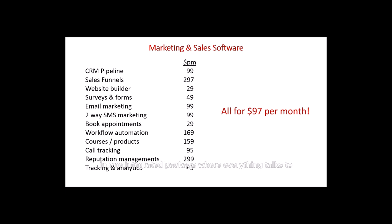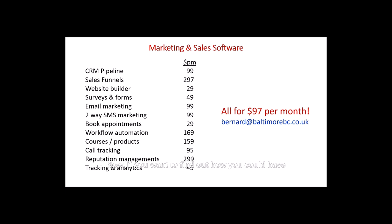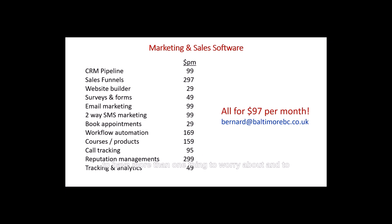What if you could get all of that in one integrated package where everything talks to each other — no compatibility issues — and you could get all of that for $97 a month? In fact, you could actually get it for just over $80 a month if you do it the right way. If you want to find out how you could have all of these software packages under one heading, integrated, all talking to each other so that you don't have to have more than one thing to worry about and learn to use, then please contact me. Either leave a message in response to this post or just email me at bernard@baltimorebc.co.uk. I look forward to hearing from you.